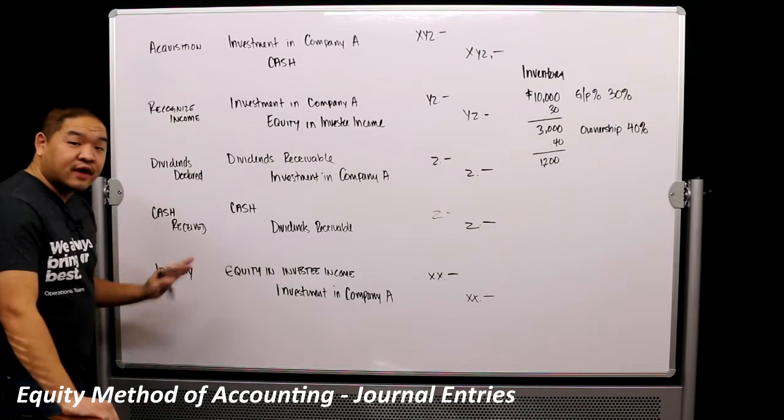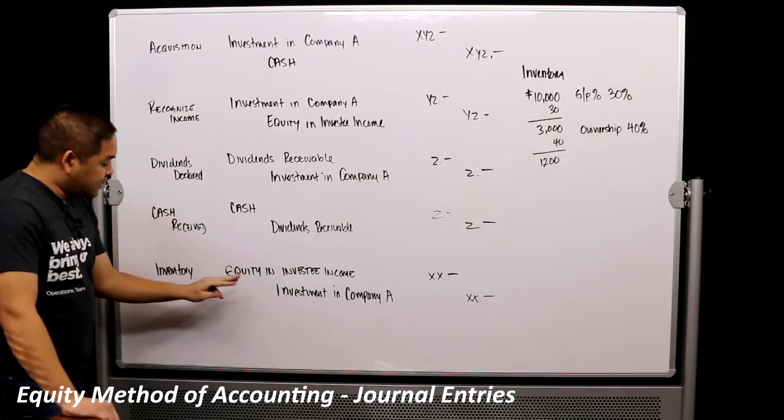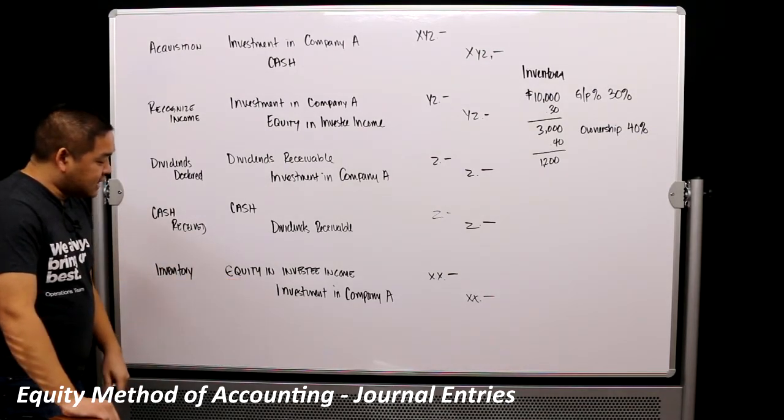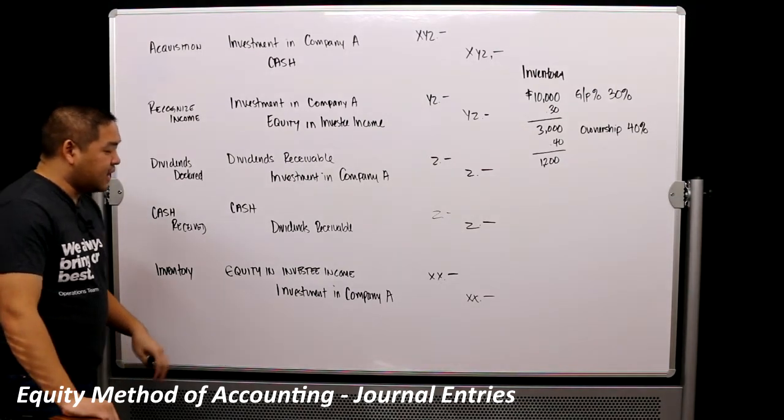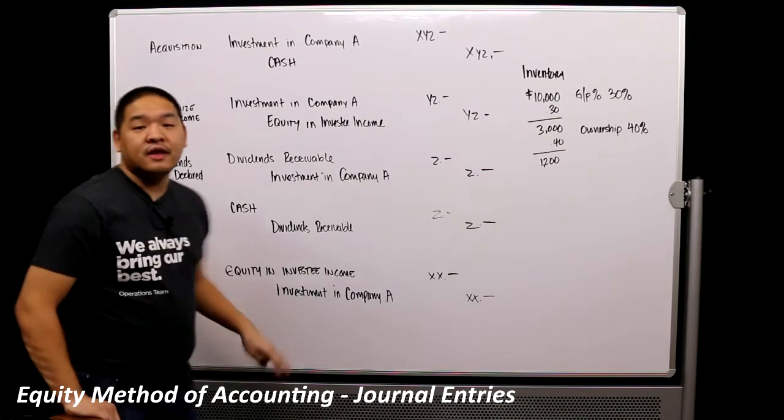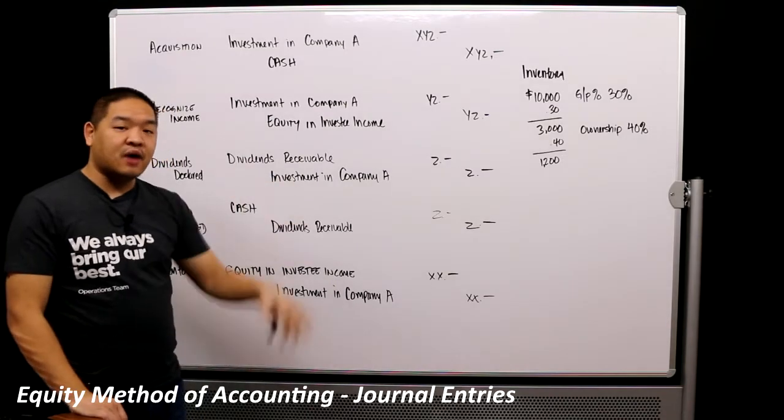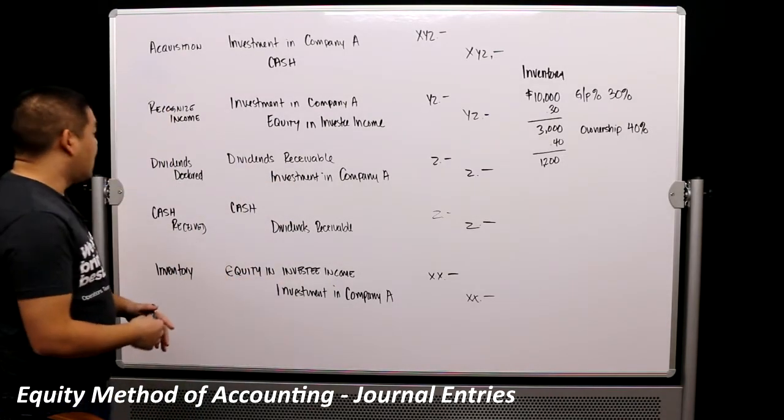So the way that we would defer, now this is defer, is we would debit equity and investee's income for X amount of dollars and we would credit investment in Company A.